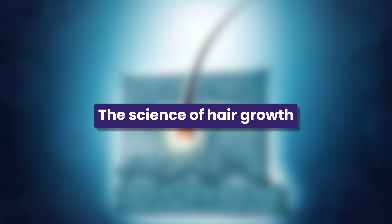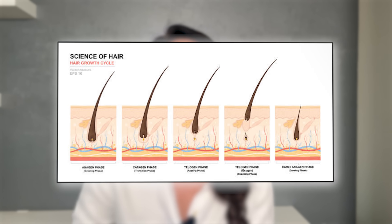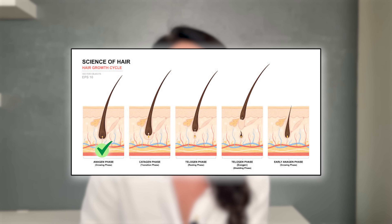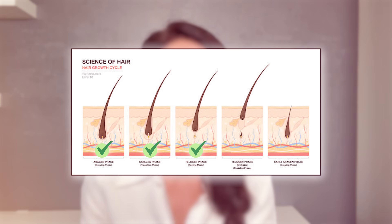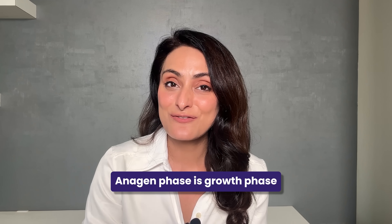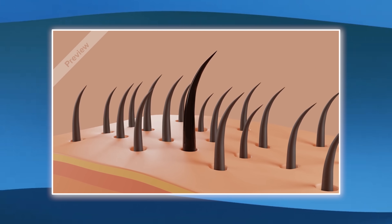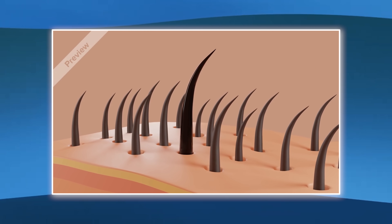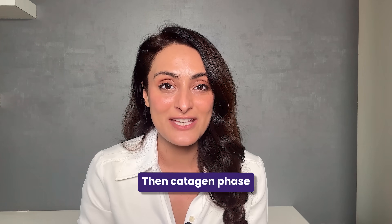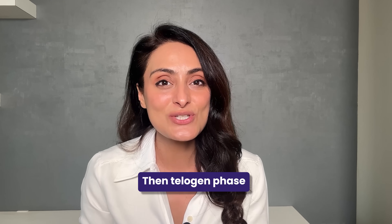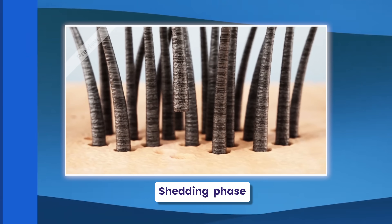So first let's understand the science of hair growth. Hair actually grows in cycles. Hair grows in cycles which are the anagen phase, the catagen phase, and the telogen phase. The anagen phase is the growth phase — that's when the hair is thicker and longer and grows in length. Then it goes to the catagen phase which is the resting phase, and then the telogen phase which is the shedding phase.